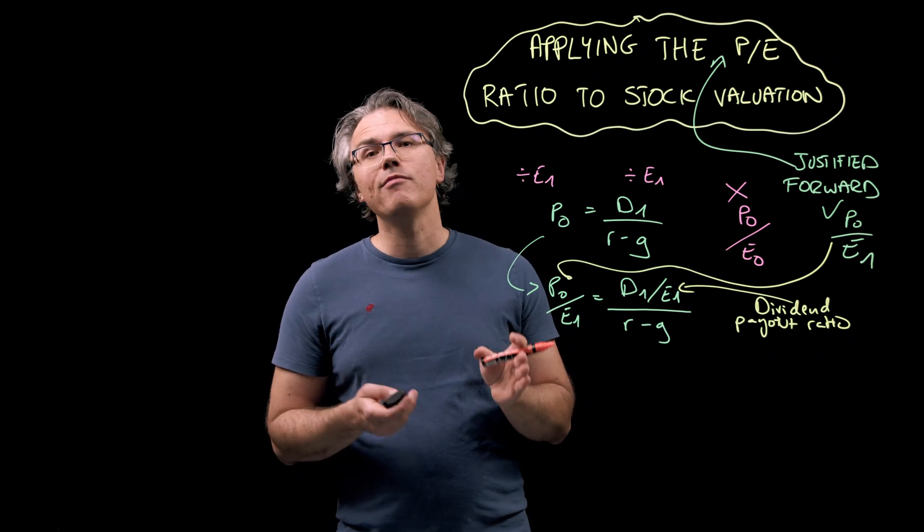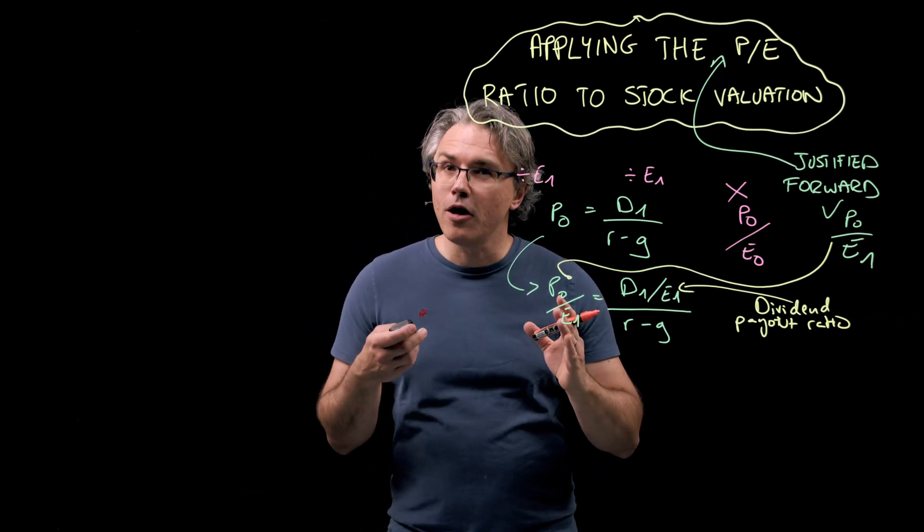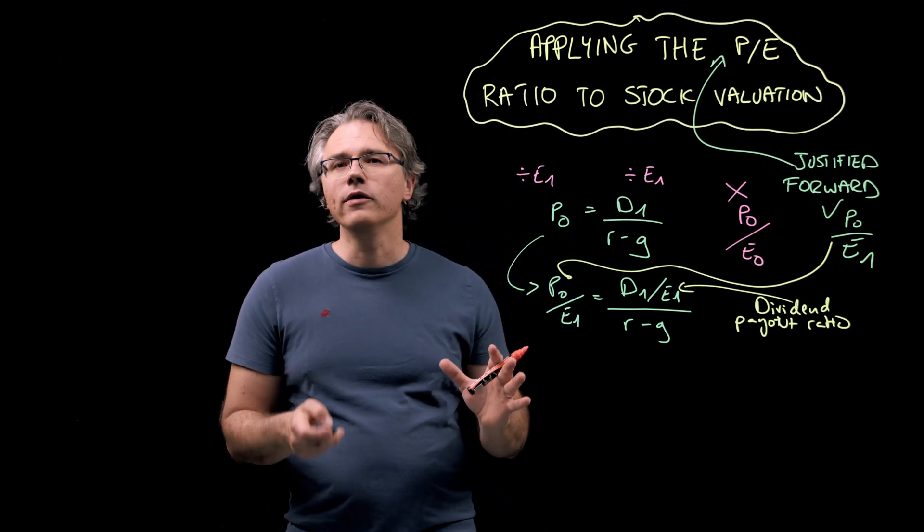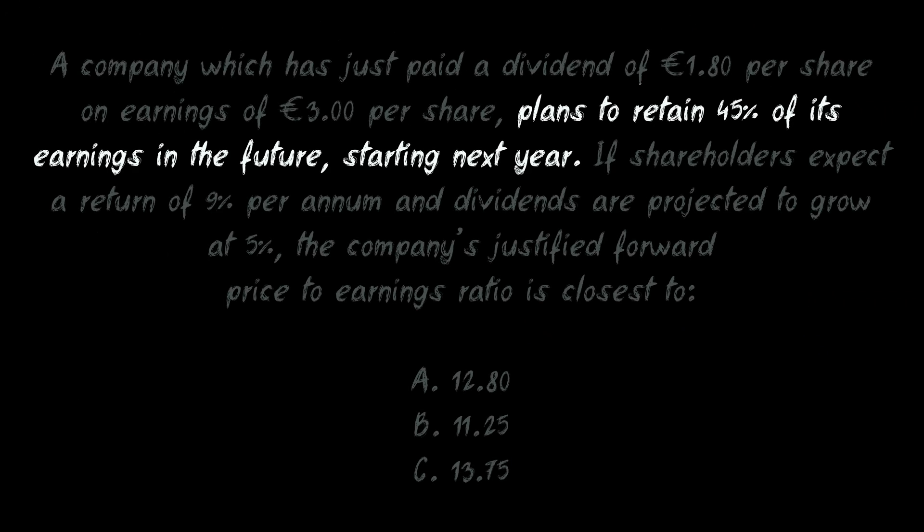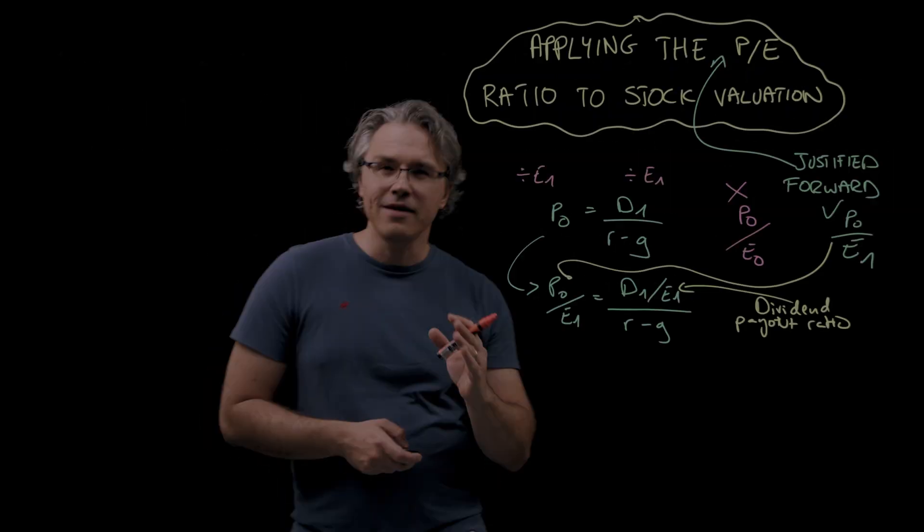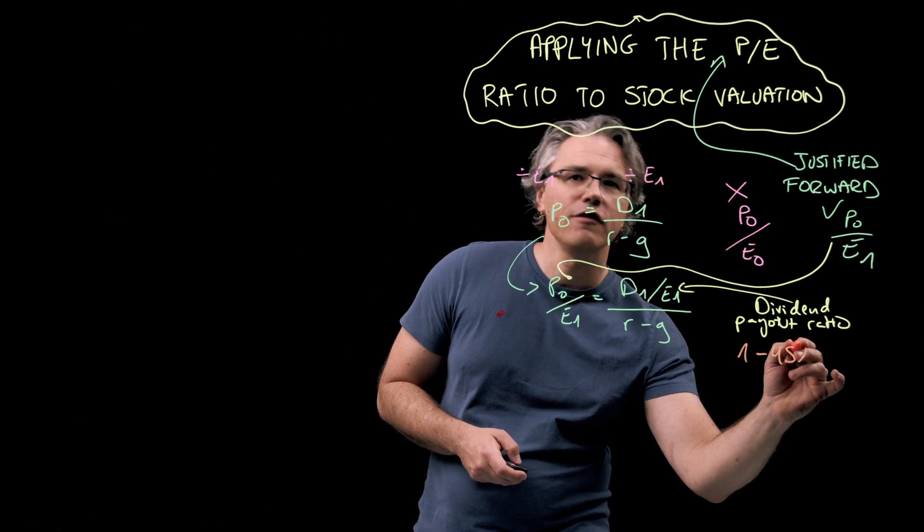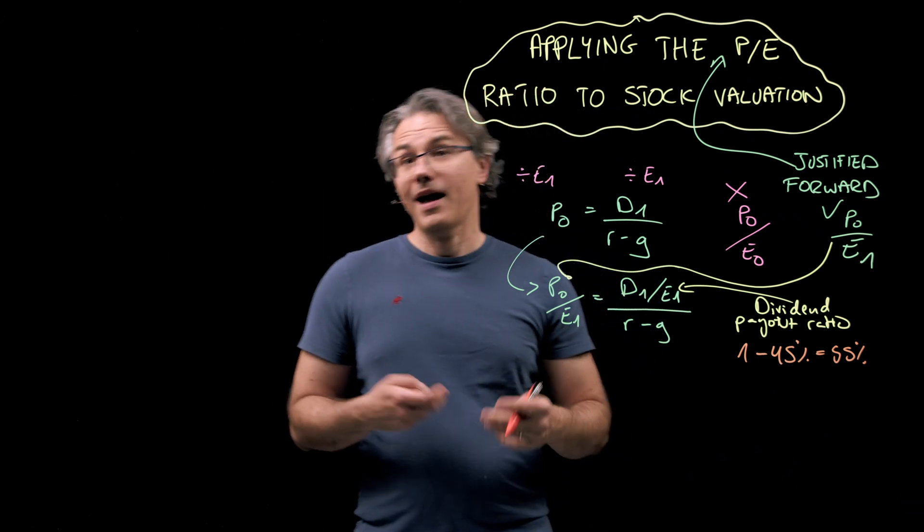So we've got to ignore how much dividend was paid last year, or for that matter, what last year's earnings were. What we should focus solely on is the fact that the company plans to retain 45% of its earnings in the future starting next year. And that implies that it will pay 1 minus 45% or 55% out as a dividend.